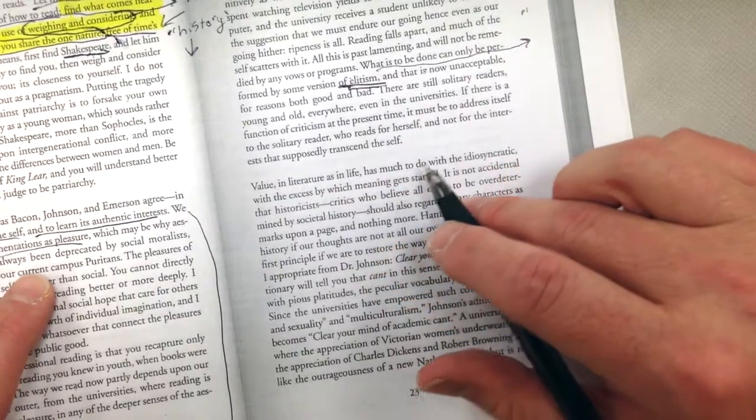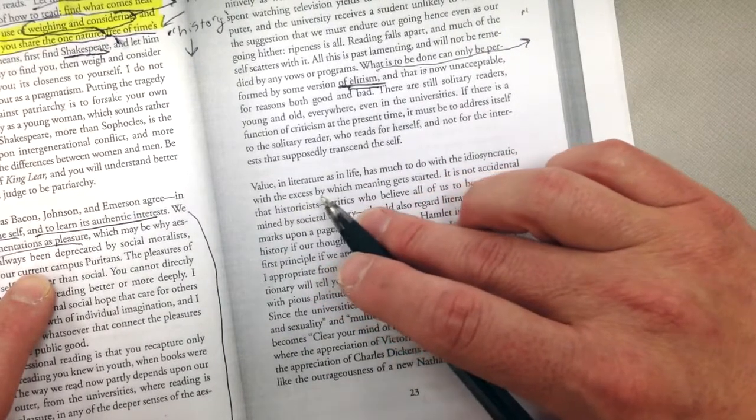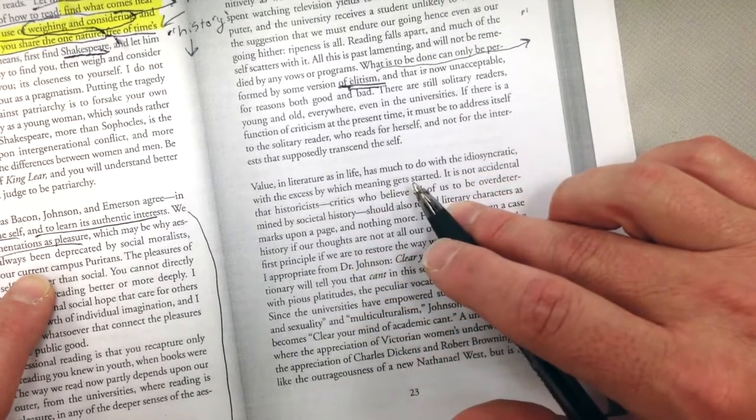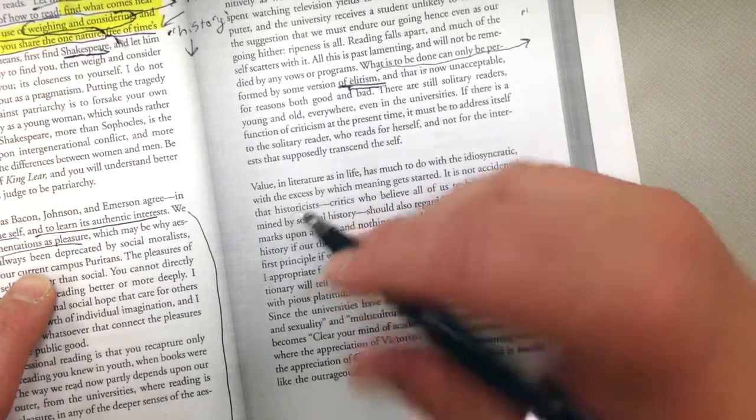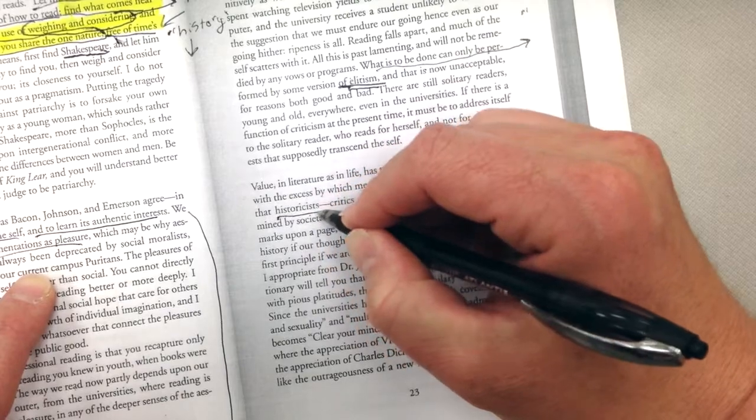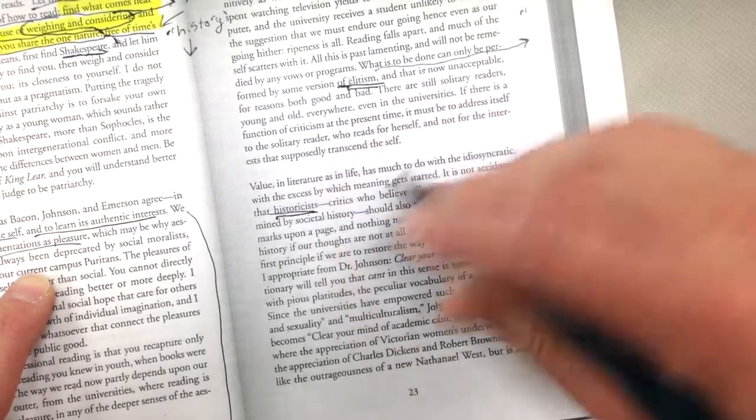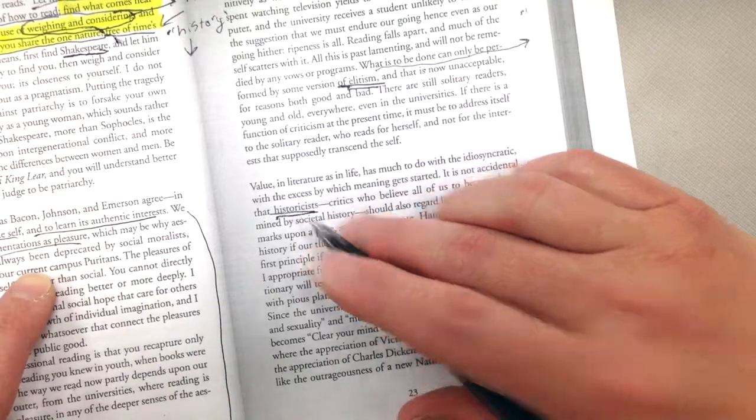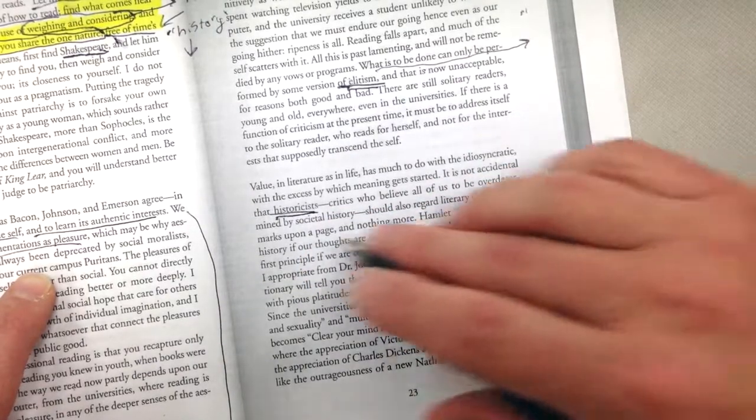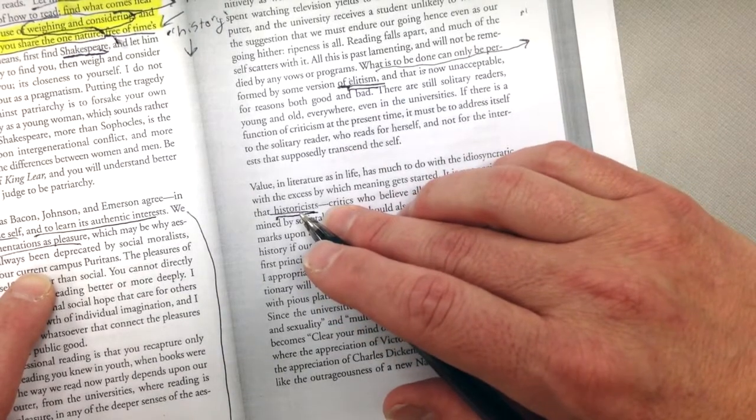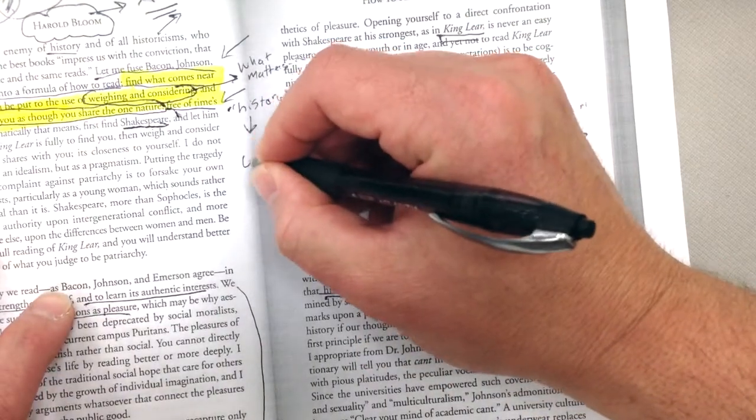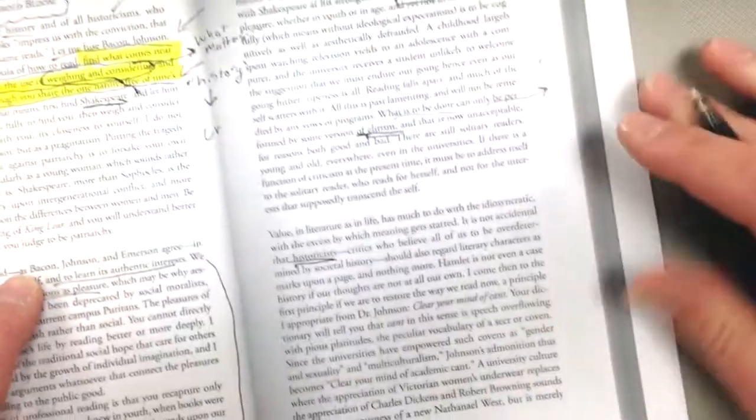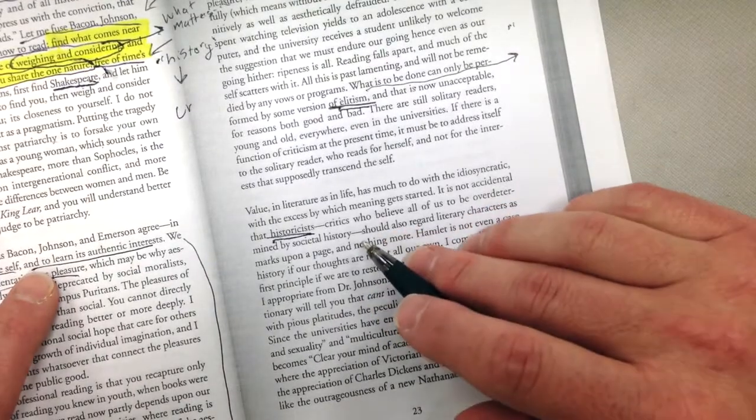All right. Value in literature and in life has much to do with the idiosyncrasy, with the excess by which meaning gets started. It is not an accidental that Historicists, here is people. He doesn't like these Historicists, right? And nothing, you know, not that history isn't valuable. He's just saying that the most important thing about literature is not, you know, what it says about the historical time. He says that it's this universal humanity is the big deal.